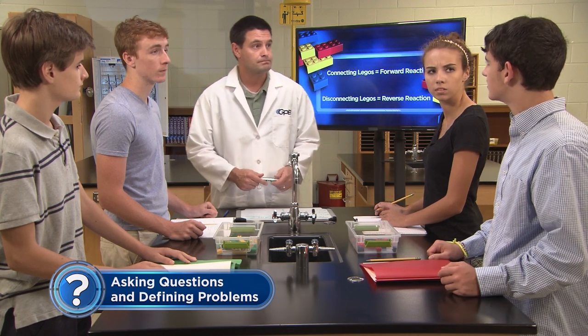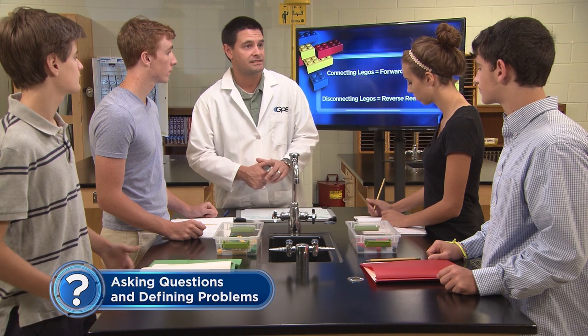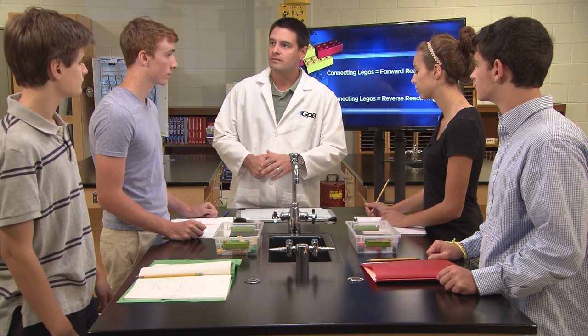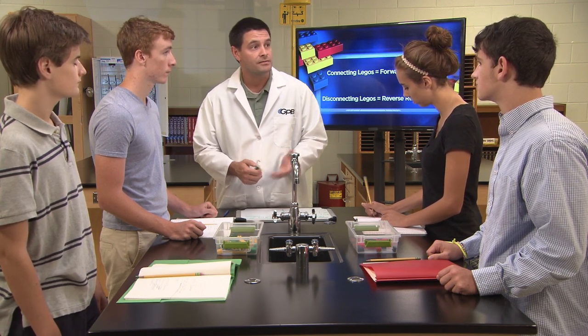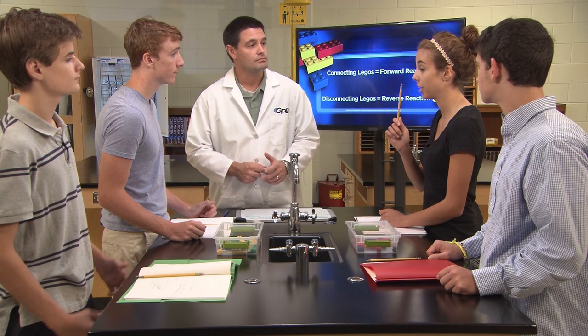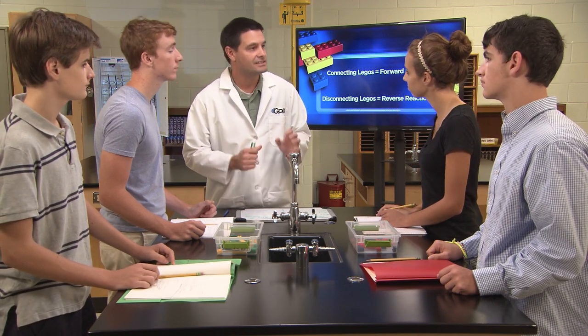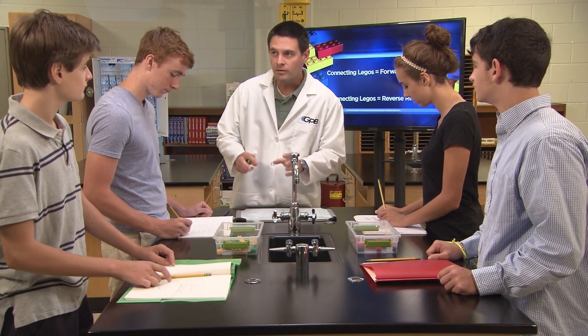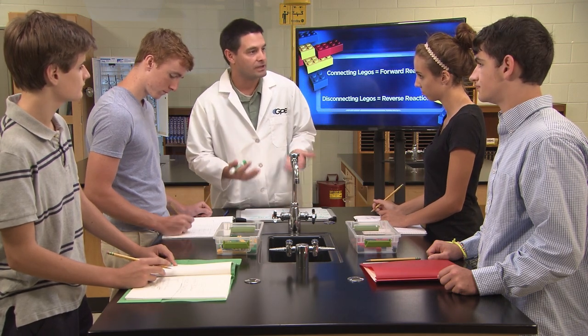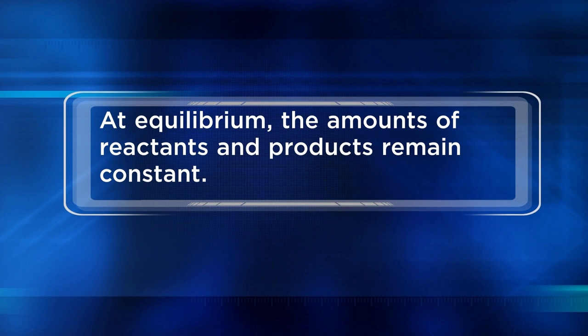How long do we do this? You'll connect and disconnect Legos for one minute at a time — I'll tell you when to start and stop, then we'll count how many reactants and products are formed after each minute. After one minute, we'll check to see if the reaction has reached equilibrium. How will we know? That's when the rates of the forward and reverse reactions are the same. If the forward and reverse reactions are happening at the same rate, the amounts of reactants and products won't change at all — and that's exactly how we'll know that we are at equilibrium.